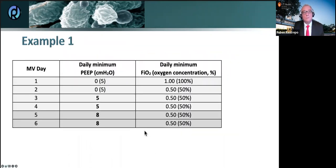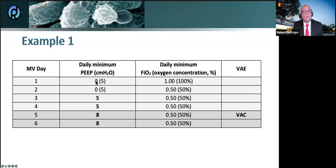Let's practice with example one. You can see the daily minimum PEEP over the first six days and the FiO2. Zero and five are considered exactly the same — because PEEP must be above five centimeters of water to count. In this case, day three and day four are the stable days, and then you have an increase of three centimeters of water on day five. Day five is when you document a VAC for this patient.